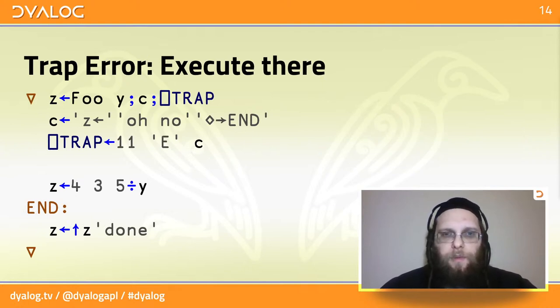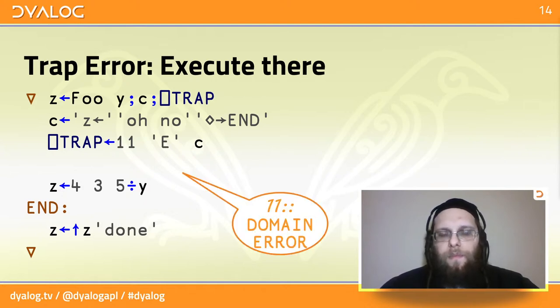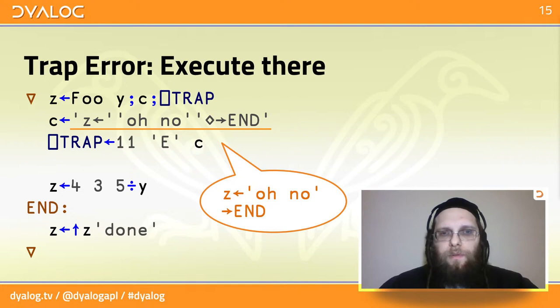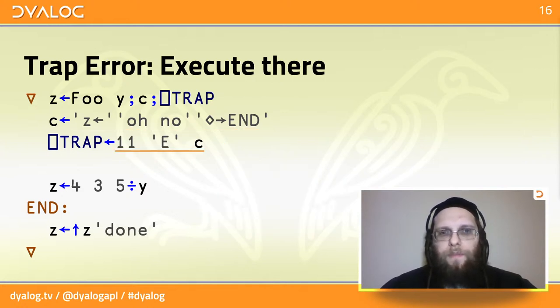Here is a function we've taken from the previous webinar. And we've set it up to catch error 11, which is a domain error. When that error happens, we're going to run this code. Notice this is a character vector that has two statements inside. So it's equivalent to these two lines of code. When an error happens, we're going to check the local quad trap. And if division here gives a domain error, then it matches this handler. And then we see we have to execute something, which is that code. So we execute these two statements, the second of which is a goto down to the label and we continue.